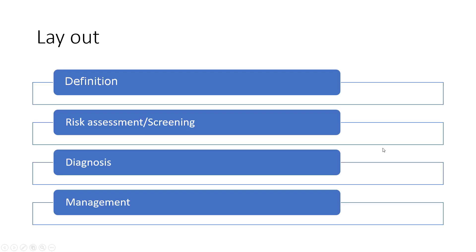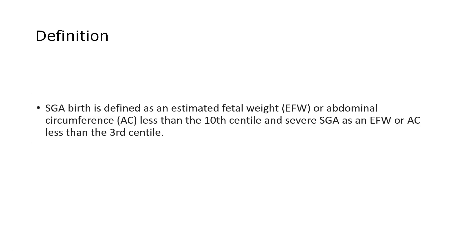The layout will be the definition, risk assessment, screening, diagnosis, and management. The definition of SGA — small for gestational age — is defined as an estimated fetal weight or abdominal circumference less than the 10th centile, and severe SGA as an estimated fetal weight or abdominal circumference less than the 3rd centile. Note that this is fetal weight and abdominal circumference.